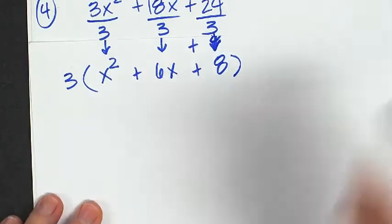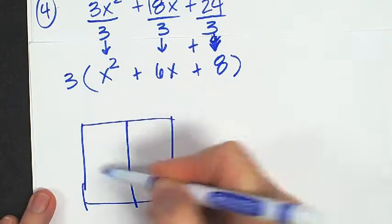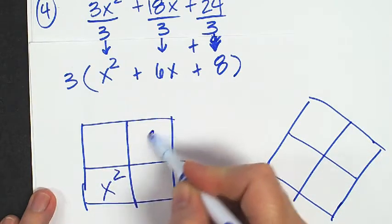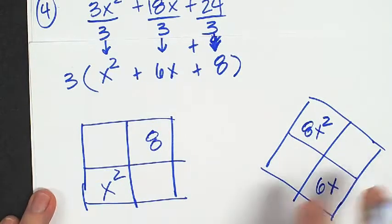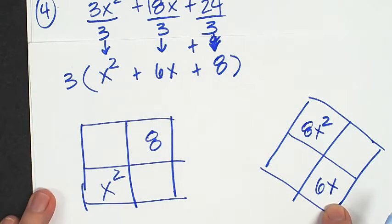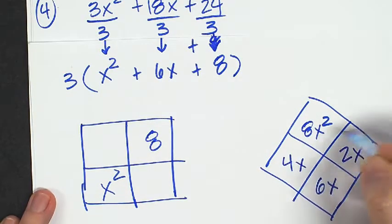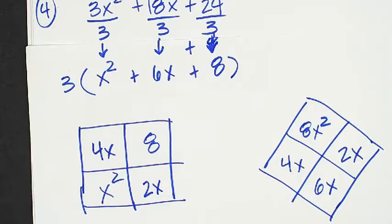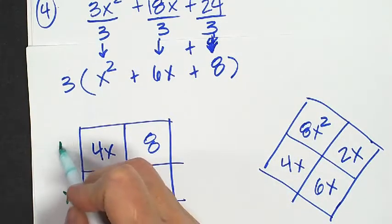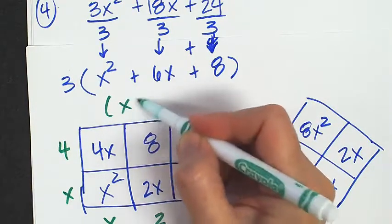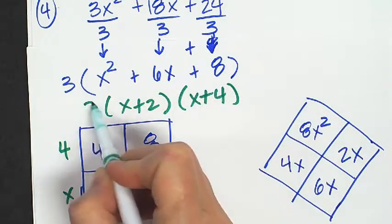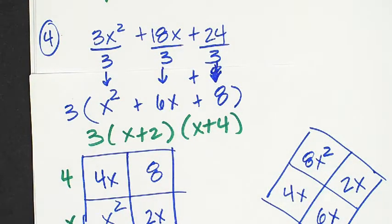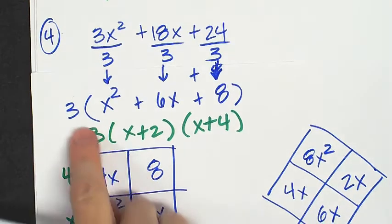Now I'm going to do my area model and diamond to figure out the missing pieces. x-squared and 8 in opposite corners gives me 8x-squared. With 6x on the bottom, I need factors that multiply to 8 and add to 6: that's 4x and 2x. So my length and width would be x plus 2 and x plus 4, and then that 3 is a factor out front. Remember, Khan said to factor completely — so 3 times (x plus 2) times (x plus 4) is the fully factored answer.